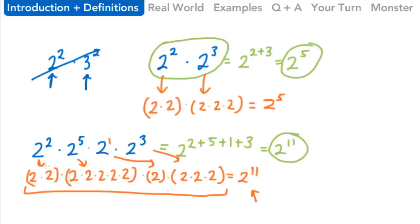It's much quicker just to recognize that we can use the multiplication law of exponents because we have the same base. Everything here is a 2 — that's what we needed to use this law. Then just recognizing that all we have to do is add the exponents jumps us straight to our answer.